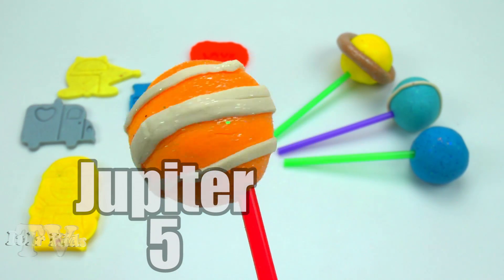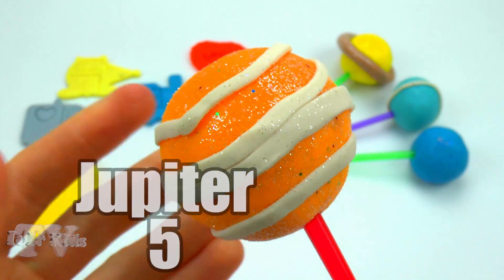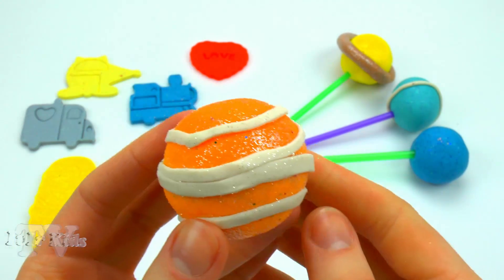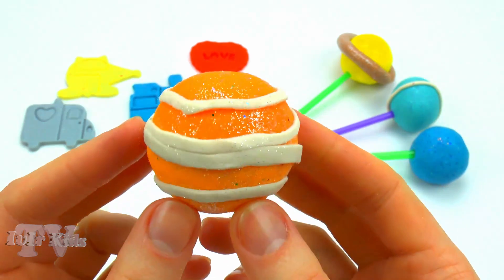Jupiter. Jupiter is the fifth planet from the Sun, the largest in the solar system. It is classified as a gas giant.